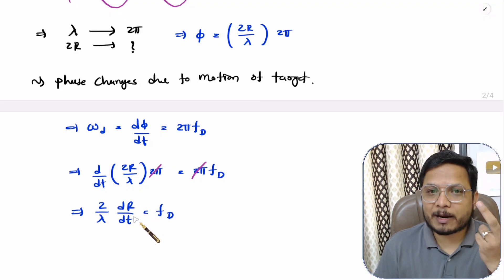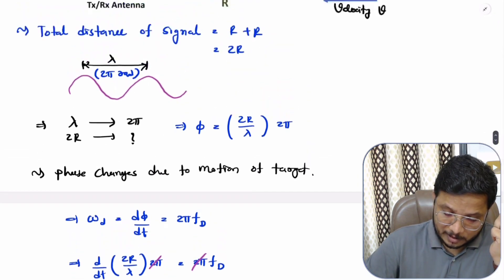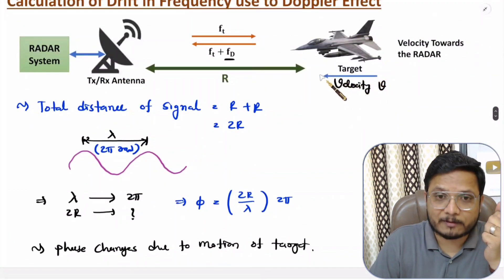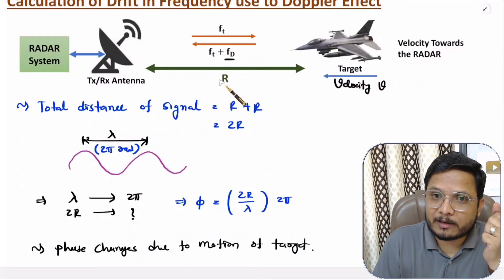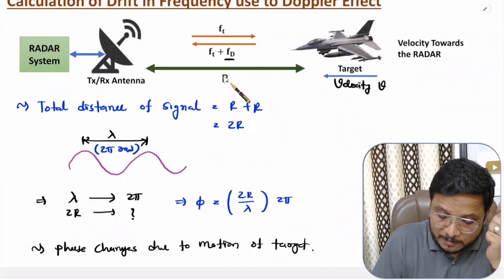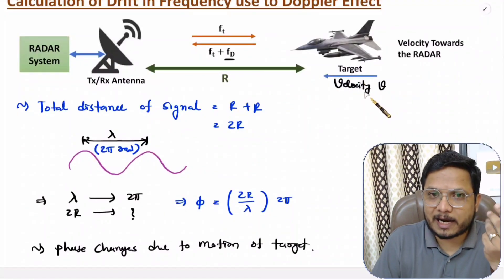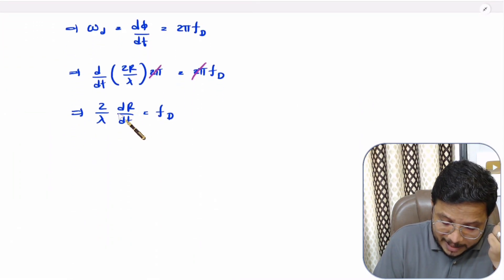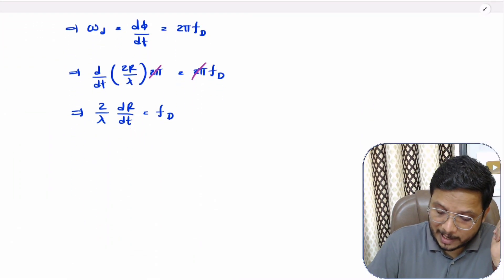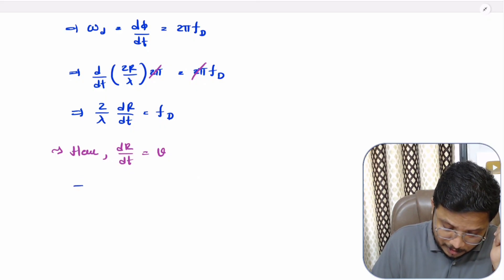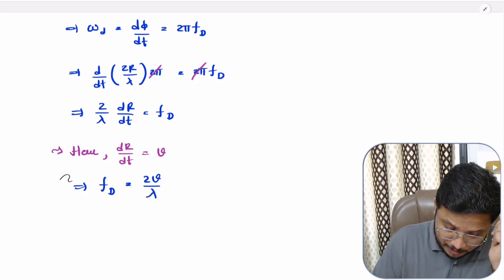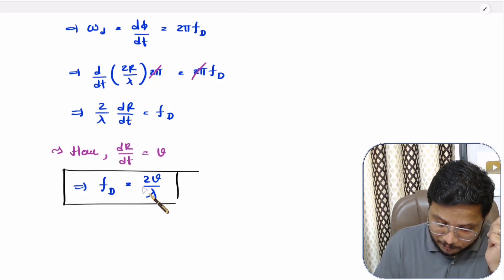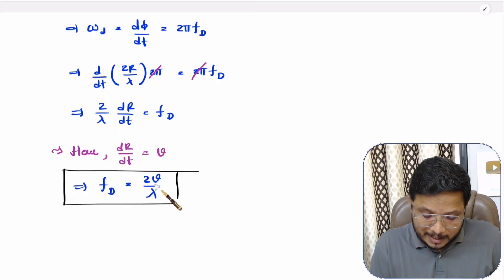Now, what is dR/dt? As the target is moving, the range R changes with respect to time, so dR/dt is the velocity of the target V. Therefore, the equation for frequency deviation becomes fd = 2V / lambda. Based on this frequency deviation, one can calculate the velocity of the target.